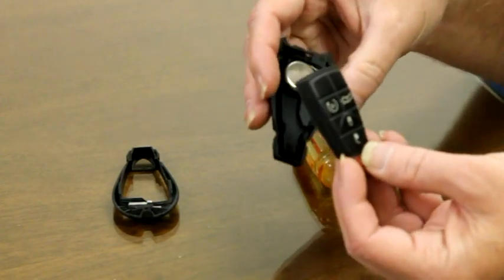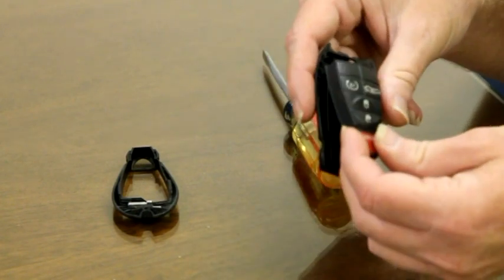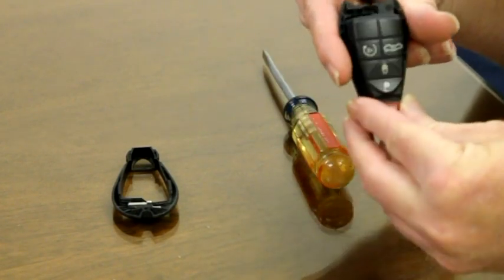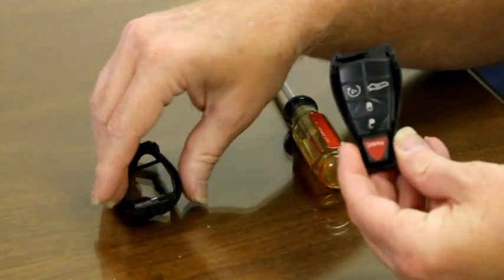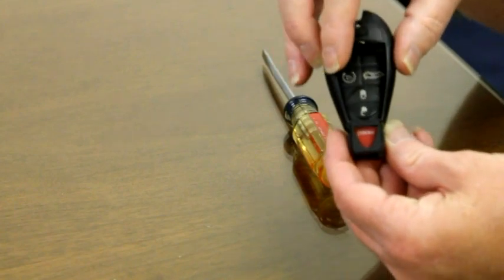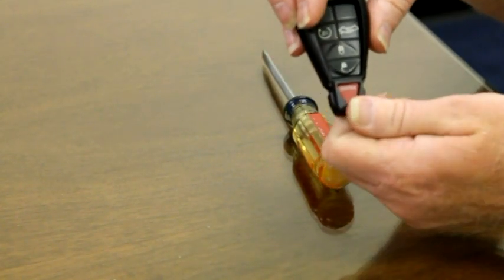The keypad itself goes right back into the key fob. It only goes in one way. There's a little tab right there. I put it in, start at the bottom. It just kind of taps right in there. Take your top piece. I start at the bottom, put it over the bottom, over the panic button. Give it a press.